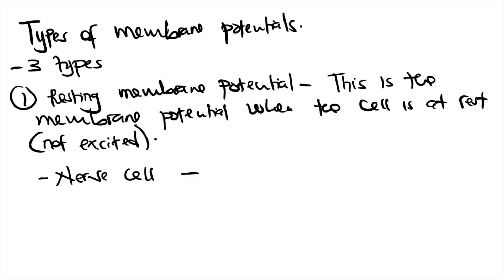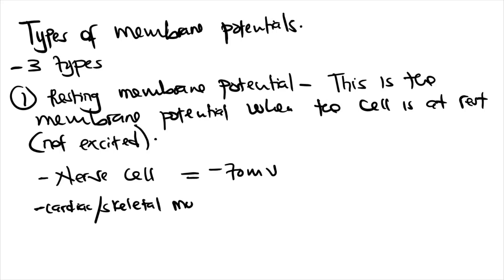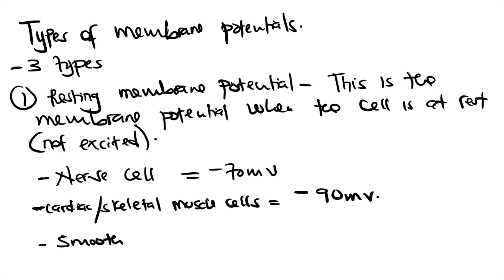The nerve cell has a resting membrane potential of negative 70 millivolts. Cardiac and skeletal muscle cells have a resting membrane potential of negative 90 millivolts. Smooth muscle, especially in the GIT, has a variable resting membrane potential ranging from negative 40 to negative 60 millivolts.